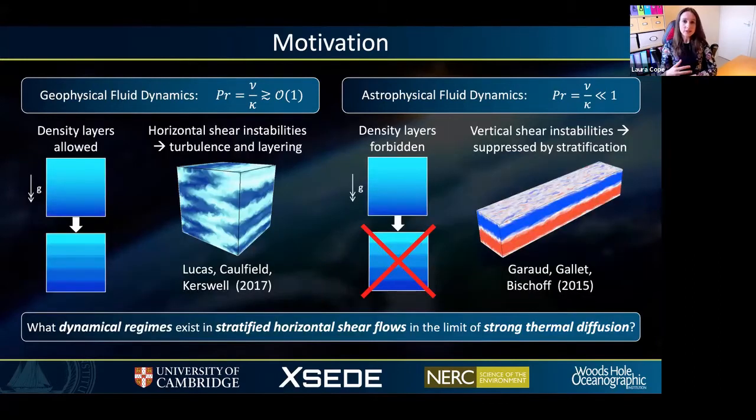The interaction of stratification and shear can lead to instabilities and turbulence, and this in turn can affect the transport properties of the fluid. Now in the geophysical context, the key to understanding this transition is through density layering. By this I mean the formation of well-mixed layers of fluid with weak vertical density gradients, and these are separated by sharp interfaces that are associated with much stronger gradients.